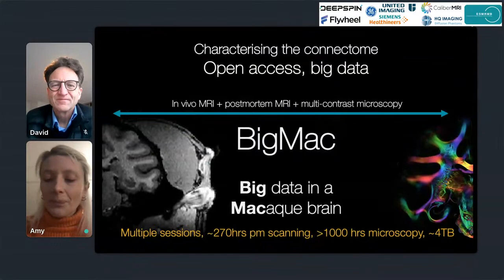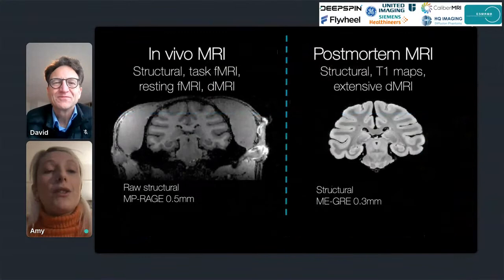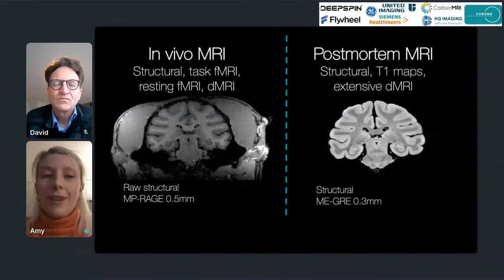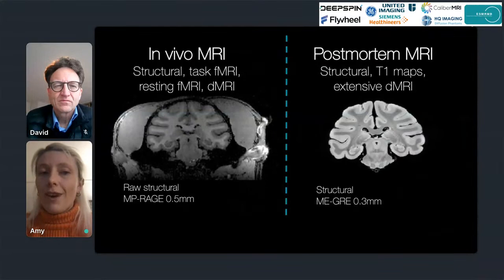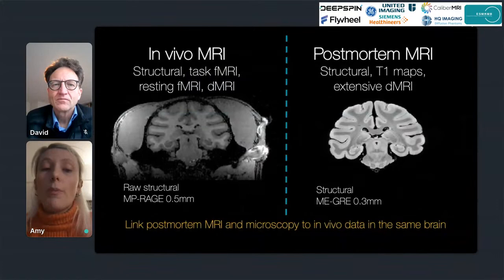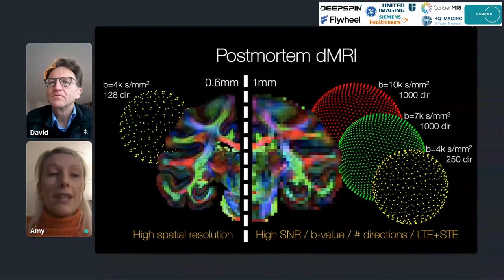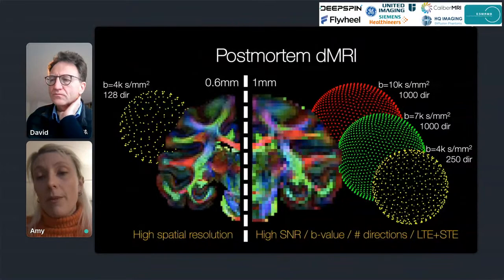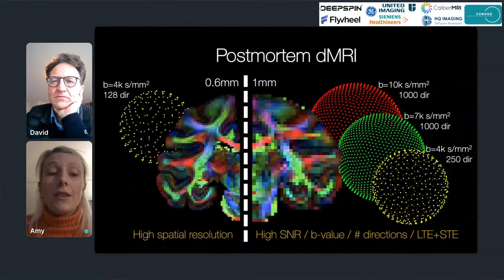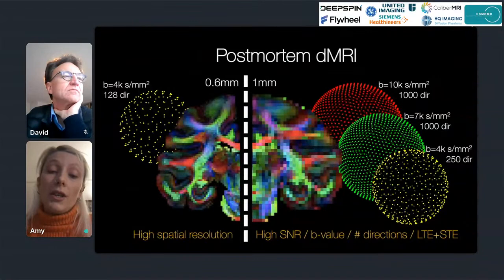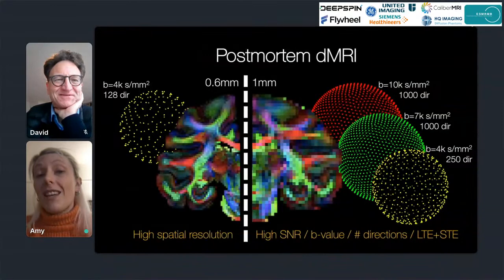The in vivo MRI includes structural MRI, task and resting state functional MRI, and diffusion MRI. The post-mortem protocol includes structural T1 maps and an extensive diffusion protocol. Having both in vivo and post-mortem data within the same animal is quite rare and provides a fantastic opportunity to link post-mortem results to in vivo data within the same brain. The diffusion MRI protocol includes two spatial resolutions: at 0.6 mm we have b4000 data with 128 gradient directions; at 1 mm we have b values up to 10,000 with up to 1,000 gradient directions across multiple shells.